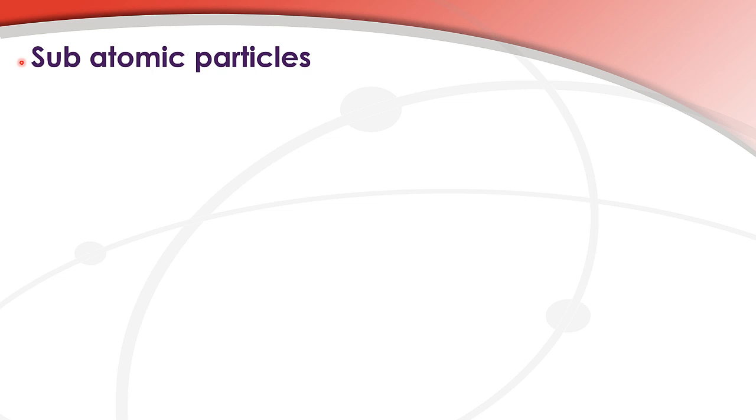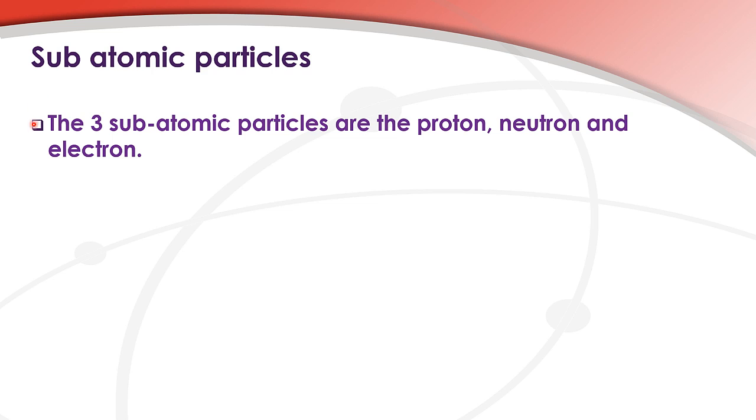We'll start with the subatomic particles. These are the particles that are found within the atom. The three subatomic particles are the proton, neutron and electron.